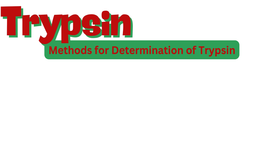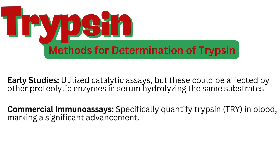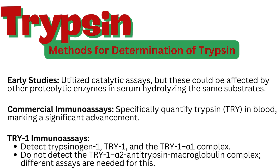Various methods are used to measure trypsin. Early studies utilized catalytic assays, but these could be affected by other proteolytic enzymes in serum hydrolyzing the same substrates. Commercial immunoassays specifically quantify trypsin in blood, marking a significant advancement. Trypsin-1 immunoassays detect trypsinogen-1 and the trypsin-1–alpha-1-antitrypsin complex, but do not detect the trypsin-1–alpha-2-macroglobulin complex — different assays are needed for this.